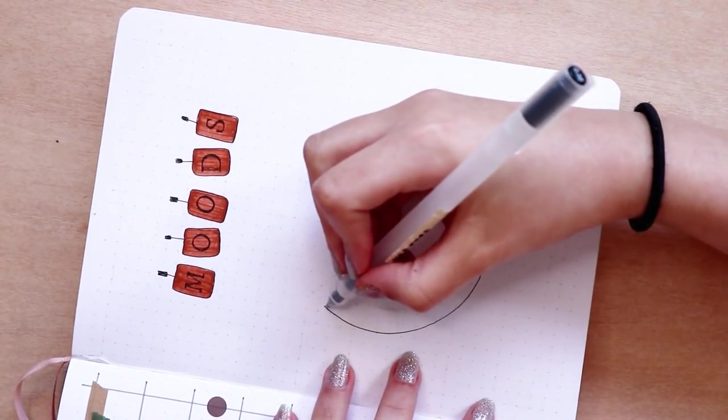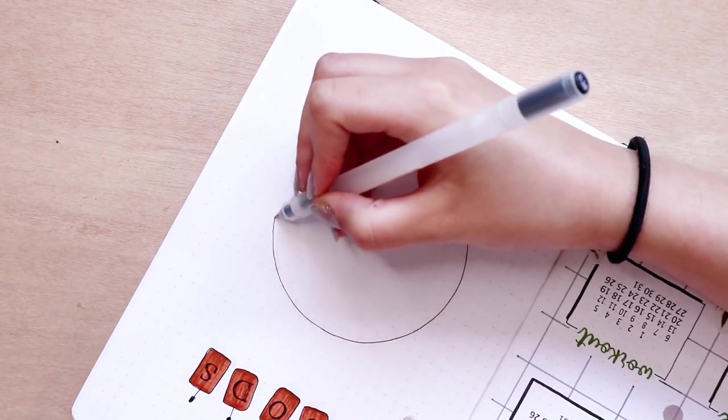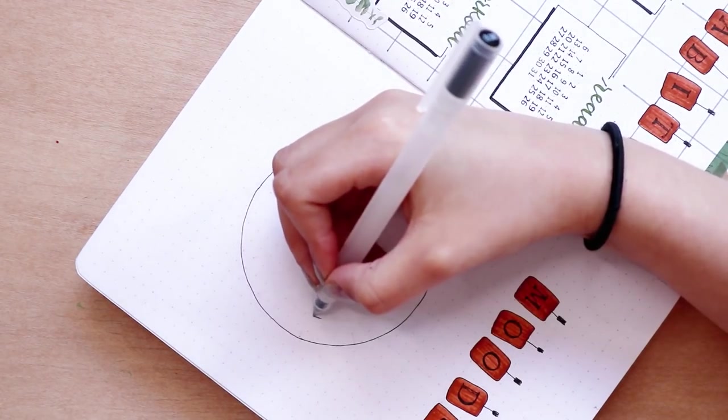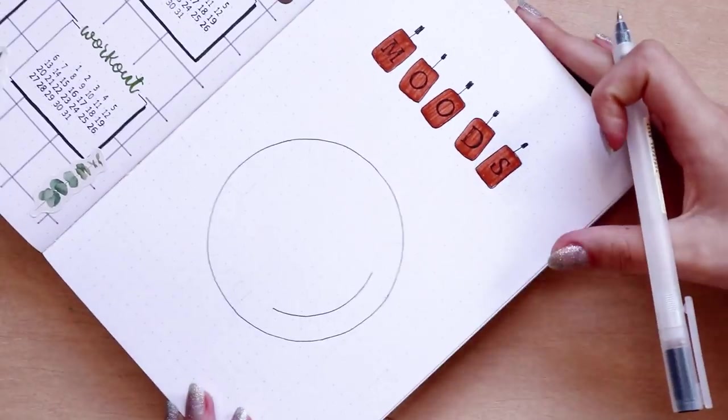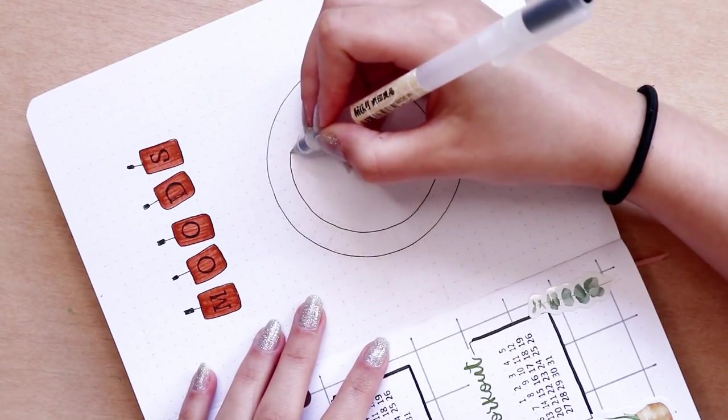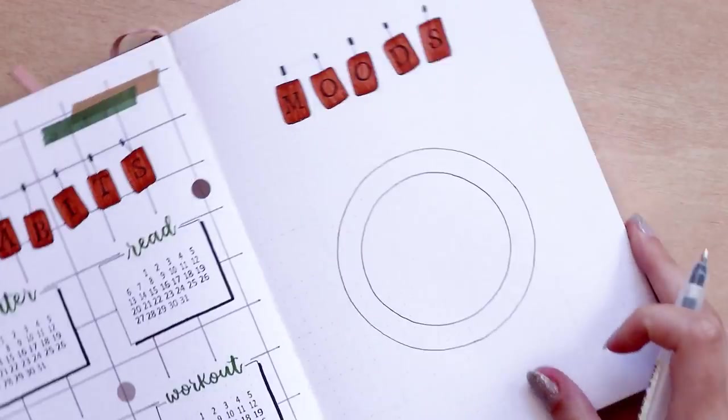I decided to go for a circular tracker since most of my pages for this month have rectangles and the layout itself is normally a rectangle. I thought that a circle tracker would bring some diversity to the theme and would look cool to spice up the whole theme all together.